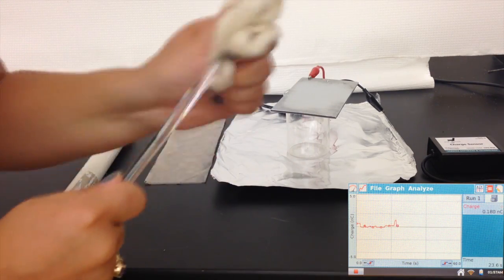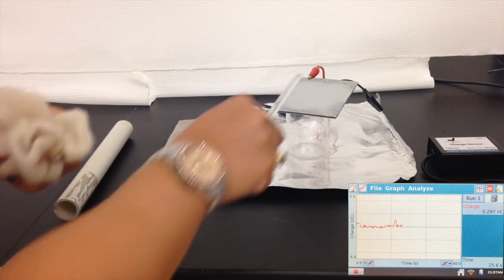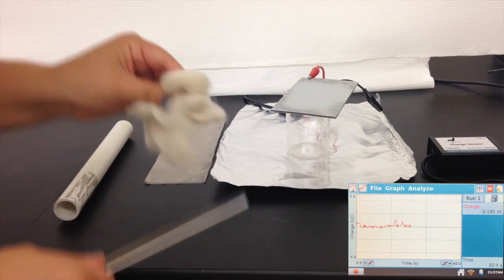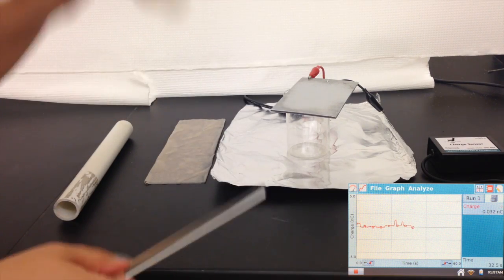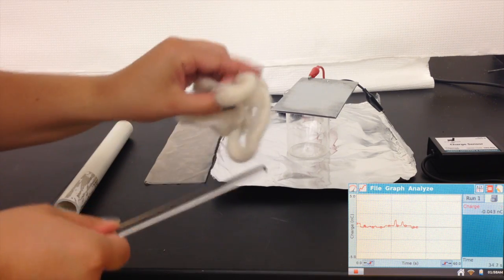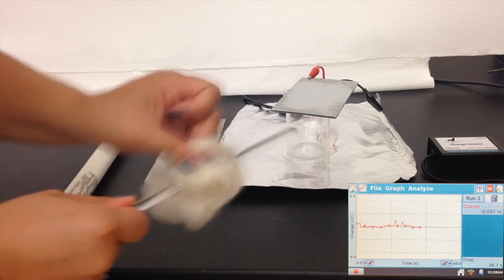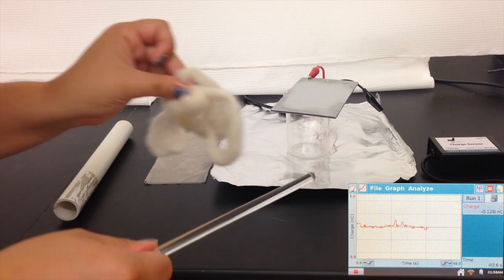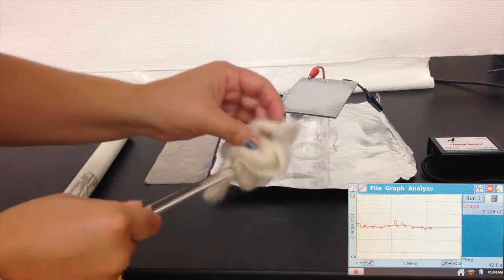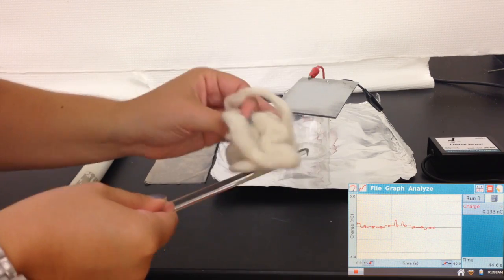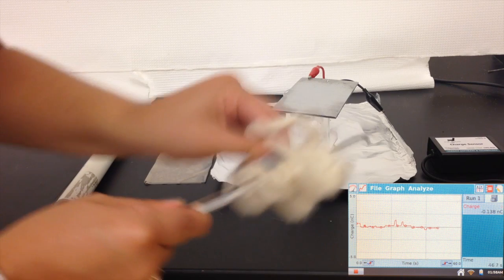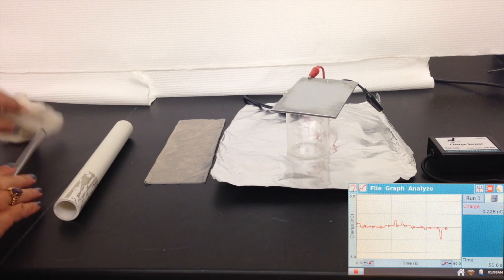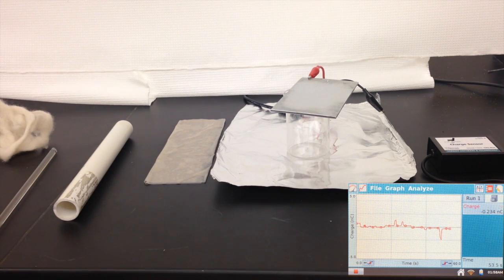From the graph, we can see that the glass rod is positively charged. We can now see that the wool is negatively charged. And therefore, we can conclude that glass is higher on the triboelectric series than wool.